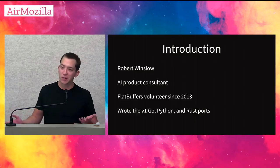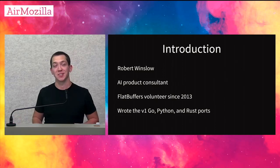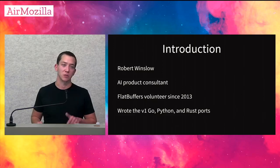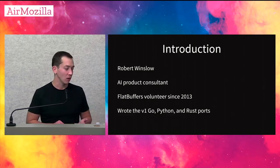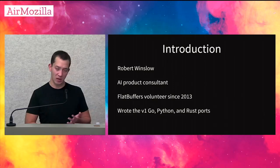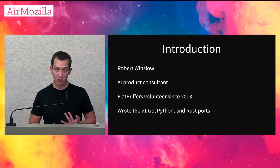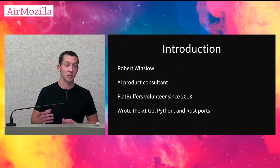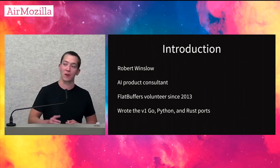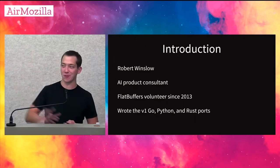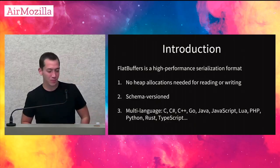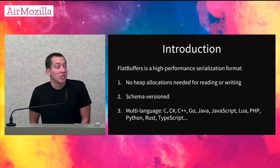My name is Robert Winslow. I'm an artificial intelligence product consultant — it's kind of a new thing, but very exciting. I've been volunteering on the FlatBuffers project since 2013. Before the Rust port, I wrote the Go and Python ports as well, so I've been involved a long time. Just as a sidebar, the creator of the project is actually here tonight — Wouter is back there in the corner.